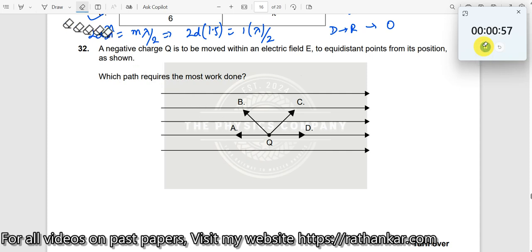Question number 32. A negative charge Q is to be moved within an electric field E. This is the electric field E, uniform electric field, to equidistant points from its position. Which path requires the most work done?